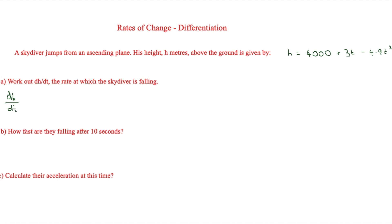And this is fairly simple, as all we have to do now is differentiate this, because this is h and it's given in terms of t. So we know that 4000 differentiates to get nothing, and 3t differentiates to give 3. Then minus 4.9t² can differentiate to give minus 9.8t. And this is all meters per second. So we'll put brackets around this and put meters per second.